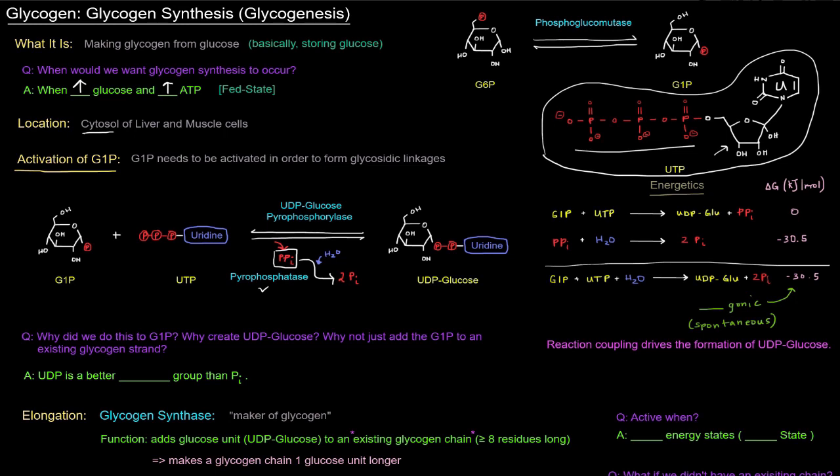And the pyrophosphatase that cleaves the inorganic pyrophosphate into two inorganic phosphates actually drives the formation of UDP glucose. So this is an example of reaction coupling driving a certain reaction to completion. Just having glucose 1-phosphate plus UTP going to UDP glucose and inorganic phosphate has a delta G of zero. So it's not really driven to happen, but the hydrolysis of the pyrophosphate into two inorganic phosphates is highly exergonic. So the overall process is exergonic as a result and therefore spontaneous.